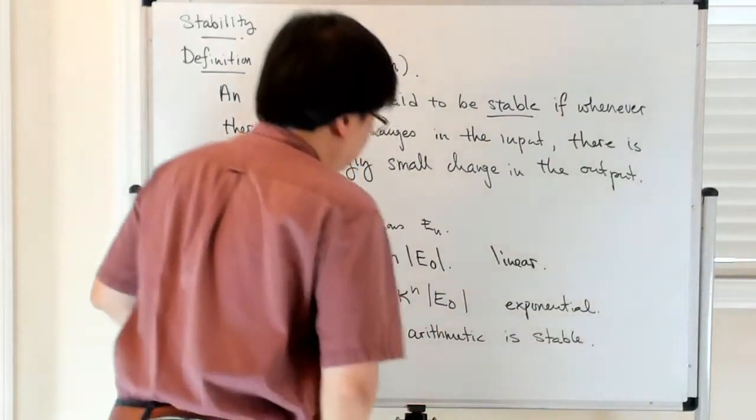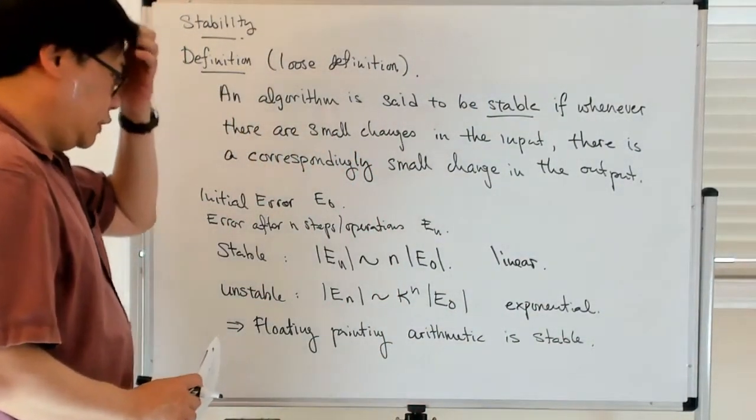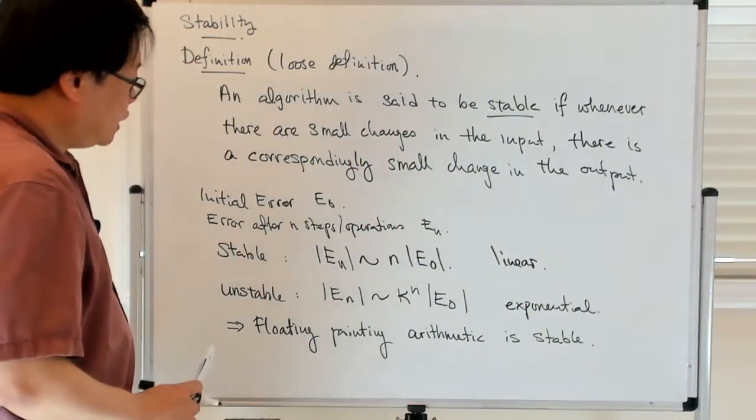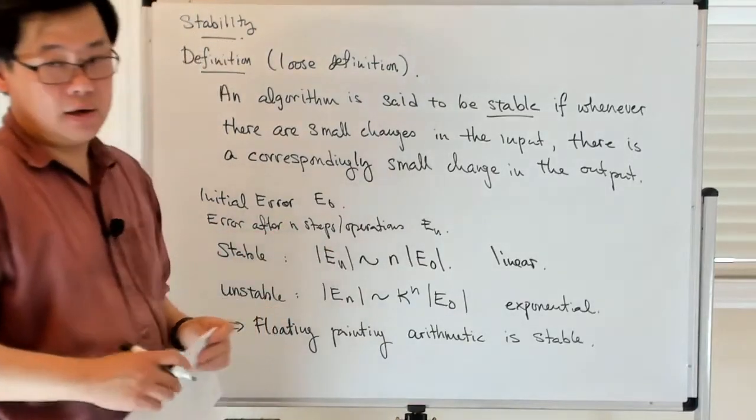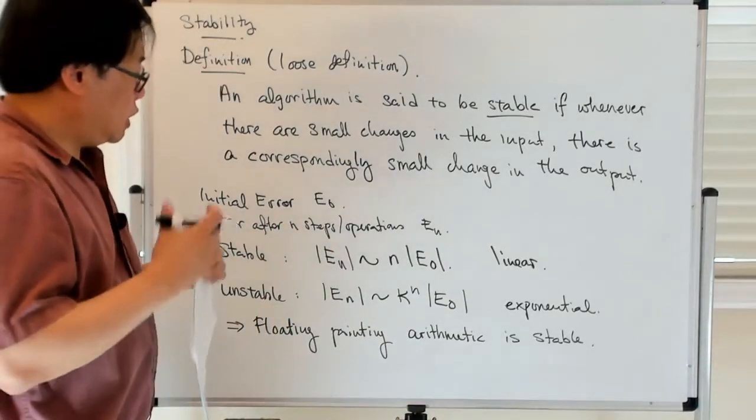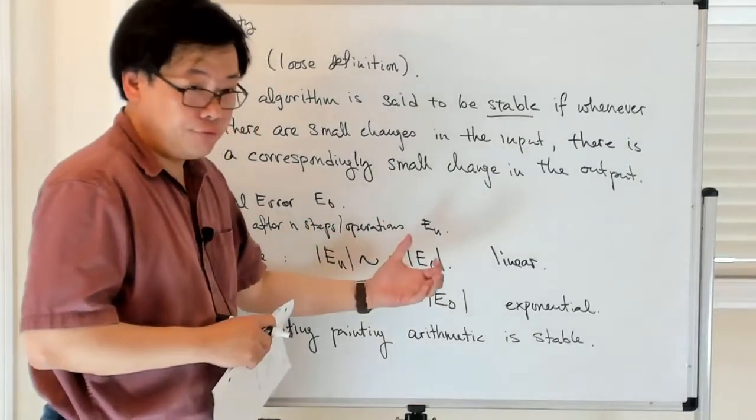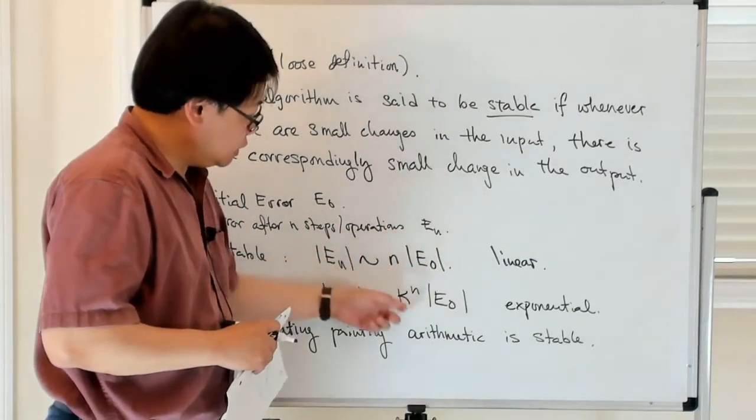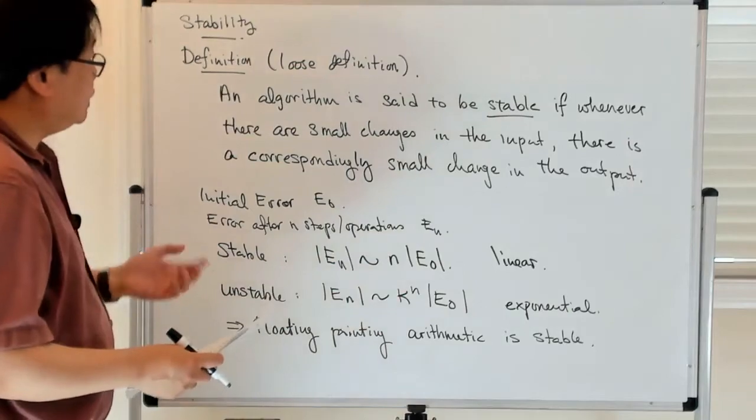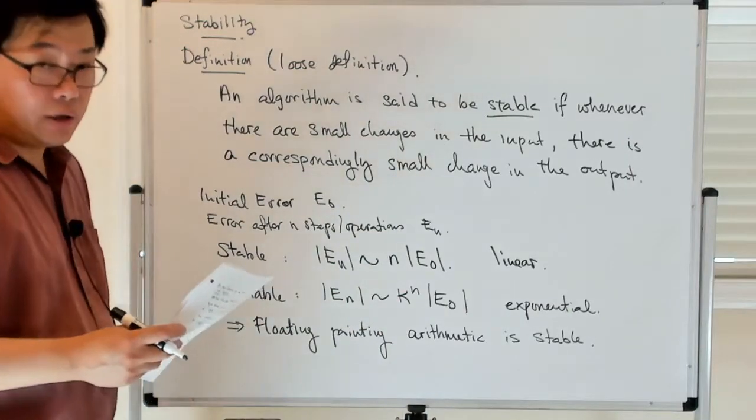So what this discussion sort of alludes to, if you will, is that we would like to have some sort of systematic way of representing this idea of growth of a certain quantity.